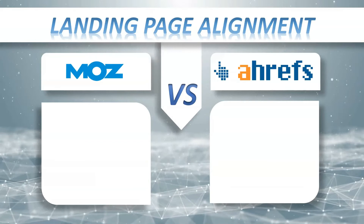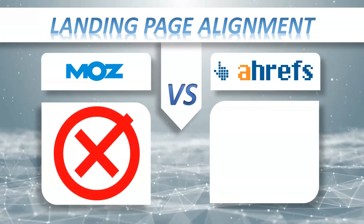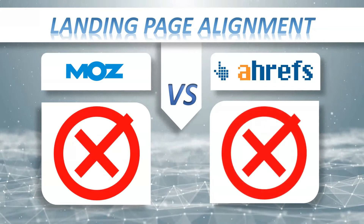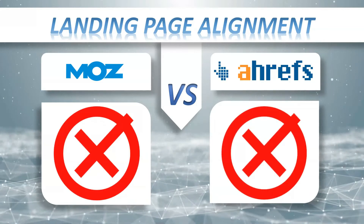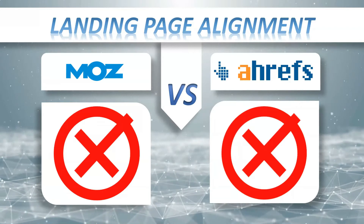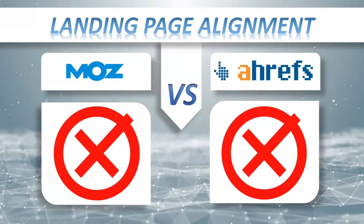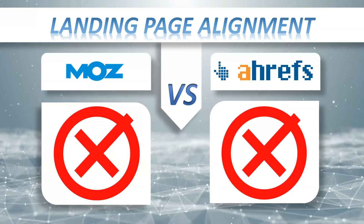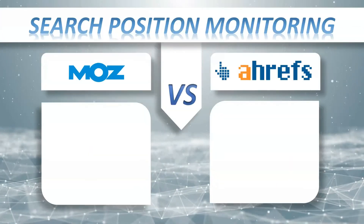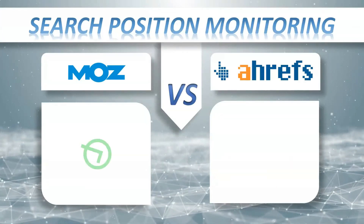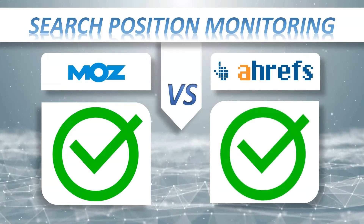Landing Page Alignment: Moz Pro — minus, Ahrefs — minus. When you're tracking your SEO or PPC efforts, you'll want to know what pages on your site are performing the best. Seeing your competitors' top performing landing pages can also help you understand what works well with your audience.